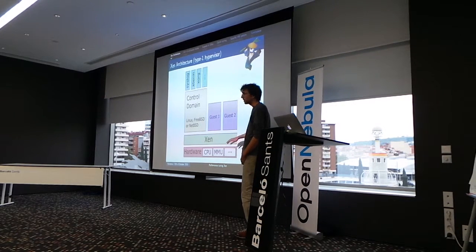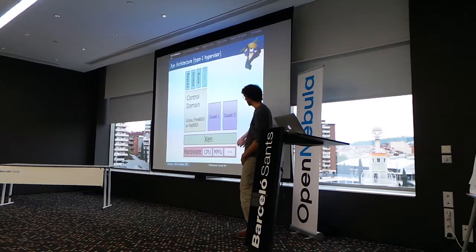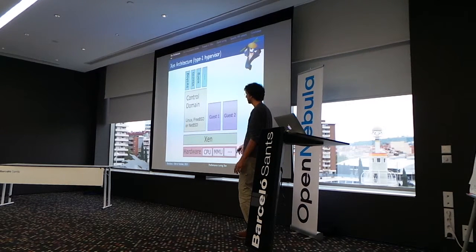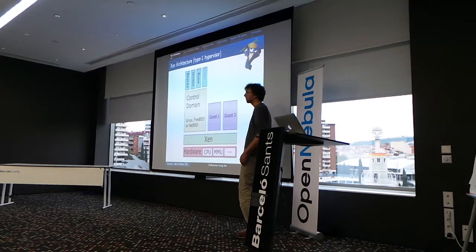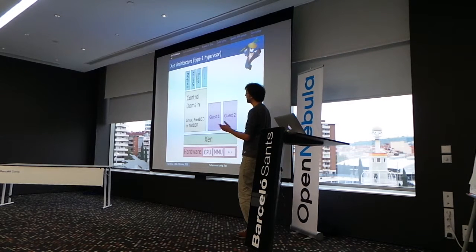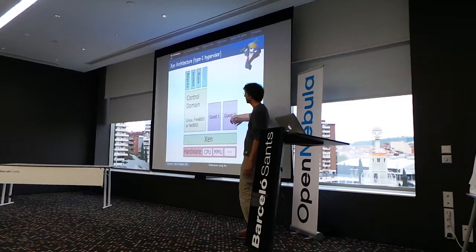This is the architecture of a Xen system, which is a type 1 hypervisor. Here we have all the hardware, then we have Xen on top, which is a microkernel that runs directly on the hardware. Then we have the guests on top of that. Xen itself is not an operating system — it doesn't have drivers, a command line, or anything like that. So in order to control the hypervisor, we create what's called the control domain, which is created when Xen is starting.